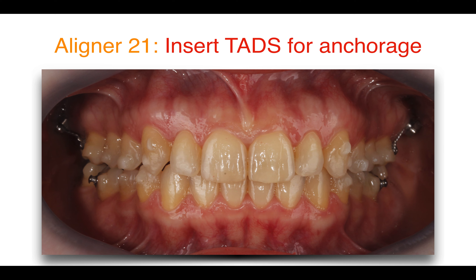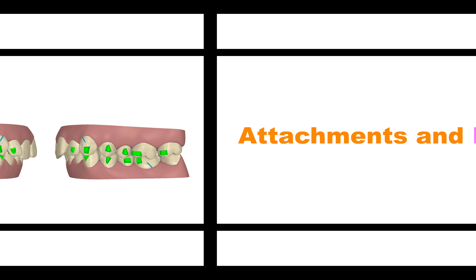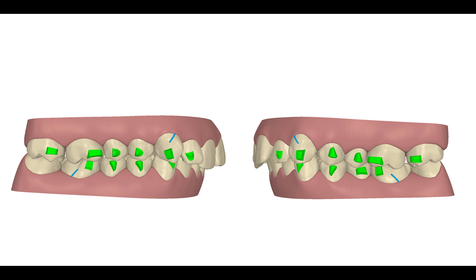You can see here, in the back, the two miniscrews, as you can see in that picture, and the metallic ligature to the button that I bonded on the first molar for maximum anchorage. The horizontal gingival attachments on 7 and 6 in the upper arch are for anchorage, because when you distalize, you need a good fitting of the aligner with the tooth.